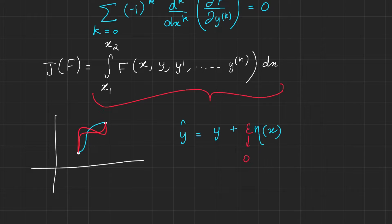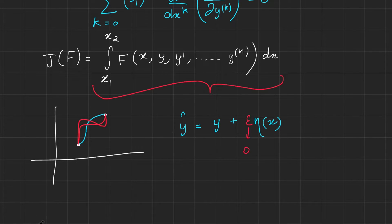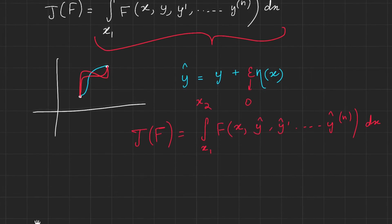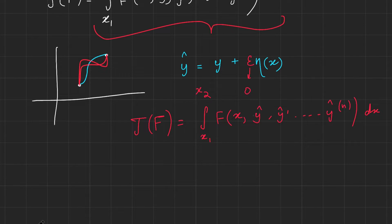We now consider the functional and replace y with y_hat. So let's consider J(f), the integral from x₁ to x₂ of f of x, y_hat, y_hat′, all the way up to the nth derivative of y_hat. We know J(f) is a function of all these parameters, and also of y_hat, which is a function of x and of epsilon, since we can vary epsilon. When epsilon equals zero, that gives us the optimizing function.